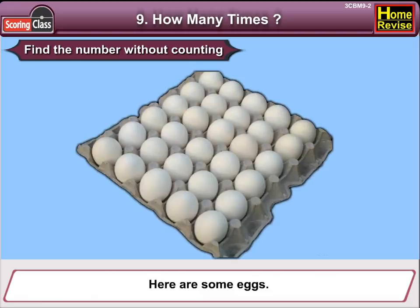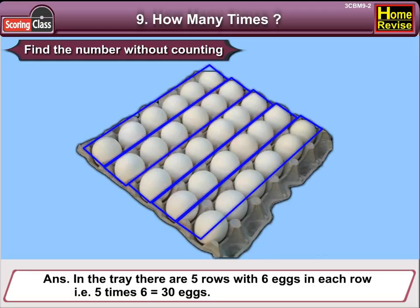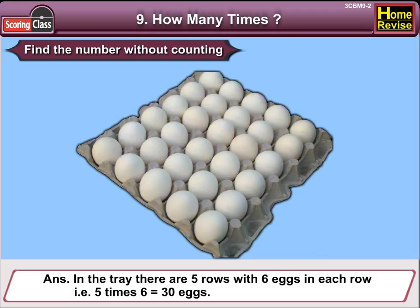Here are some eggs. How many eggs are there? In the tray, there are 5 rows with 6 eggs in each row. That is 5 times 6, which means 30 eggs.